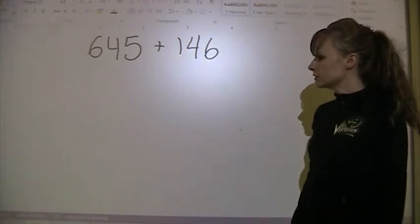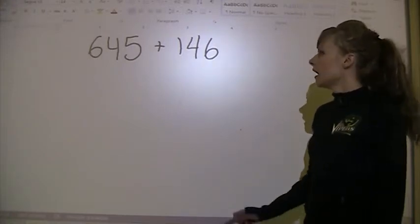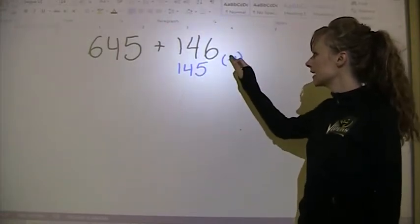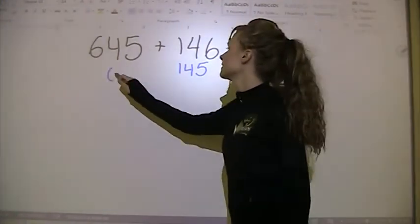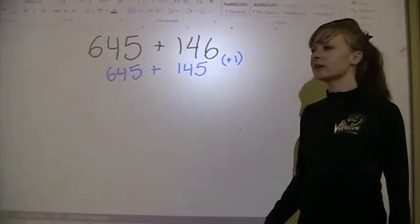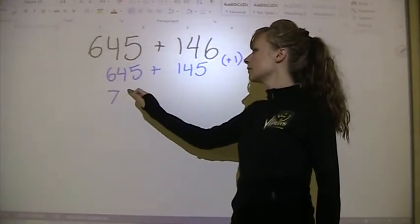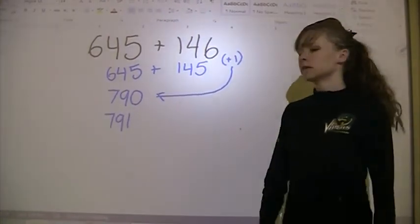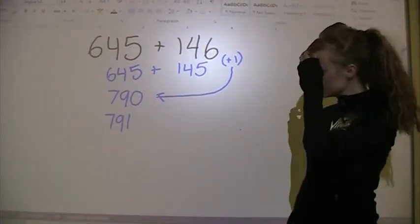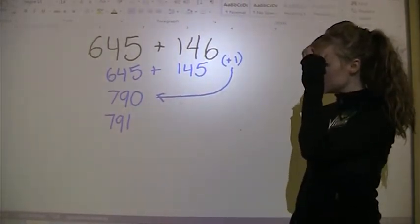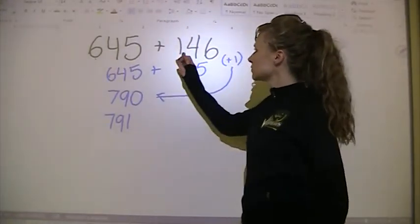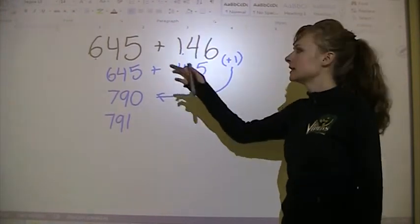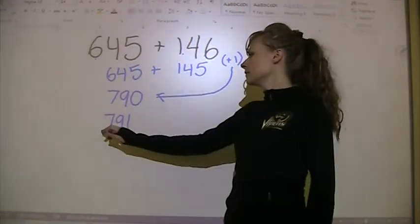For 645 plus 146, I'm going to use friendly numbers. 146 is really close to 145 — I just take away 1 — so I'll need to add 1 back later. Then 645 plus 145: 45 plus 45 is 90 and 6 plus 1 is 7, so I get 790, then add the 1 back to get 791. Using left-to-right: 6 plus 1 is 7, 4 plus 4 is 8, but 5 plus 6 is 11, which bumps the 8 up to 9 — giving 791.